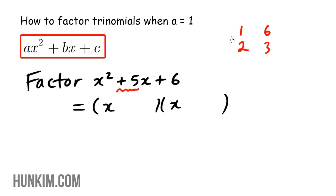So when we look at these two rows, the numbers one and six and two and three, which row feels like they add to be positive five? And the correct row would be this one here. The numbers two and three feel like five.